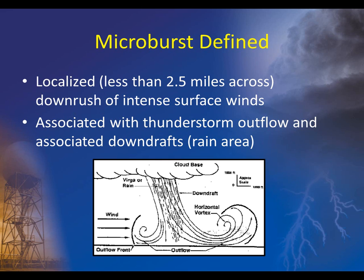In the schematic shown, as rain and wind rush to the ground and come into contact with it, some of the stronger winds spread outward from the center and curl upward, producing the two areas shown in the red boxes.